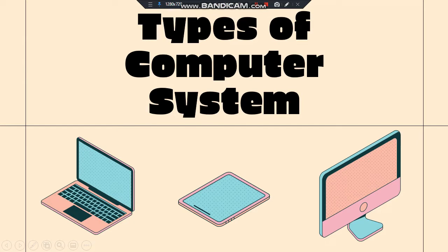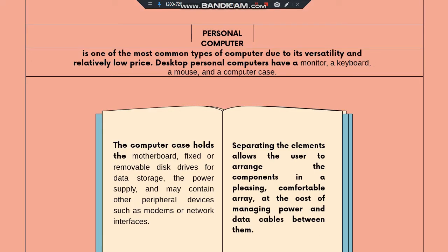Next, types of computer systems. You can see here there is a picture of a laptop, tablet, and desktop. Personal computer — a personal computer is one of the most common types of computer due to its versatility and relatively low price.